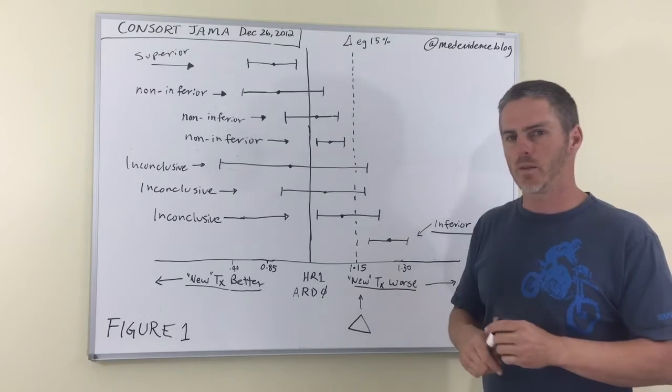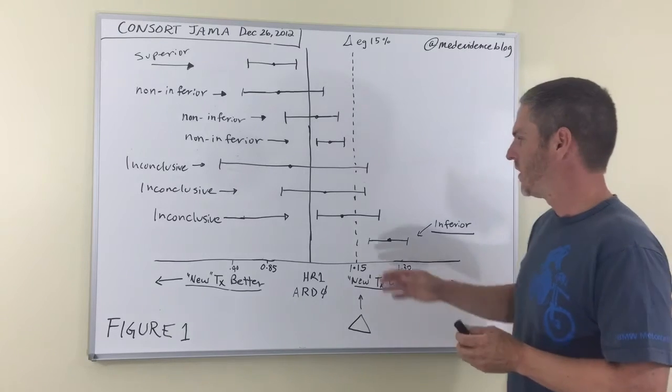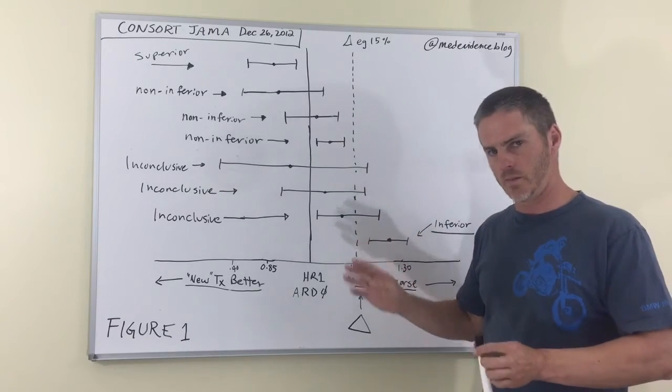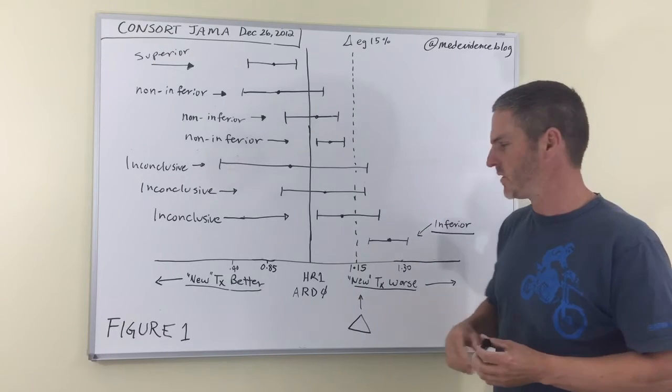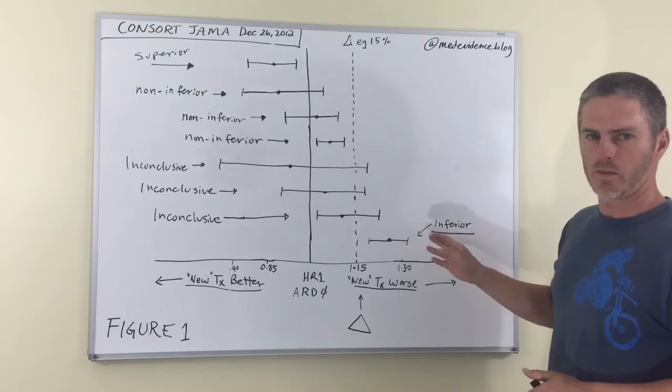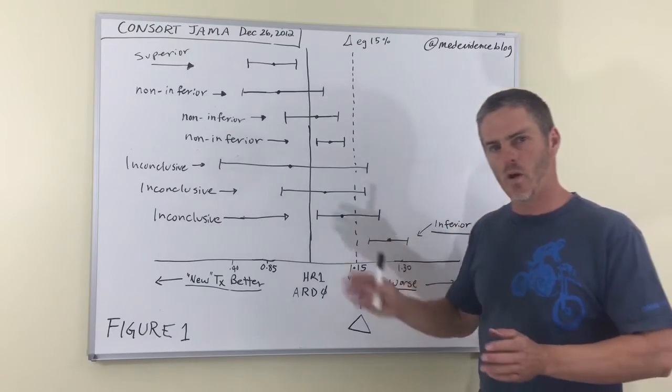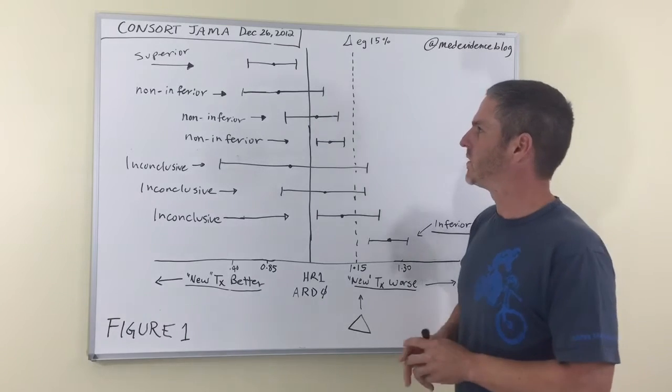If the 95% confidence interval in any way includes that value or falls to the right of it, we're going to have some difficult conclusions. Or if the point estimate in the entire 95% confidence interval falls all the way to this side, then they would say it's inferior. But let me walk you through this, for example.